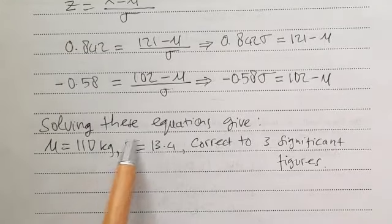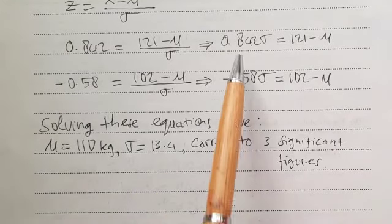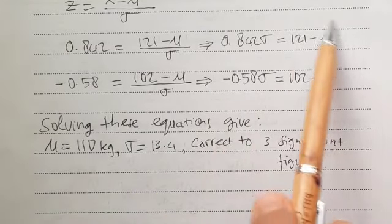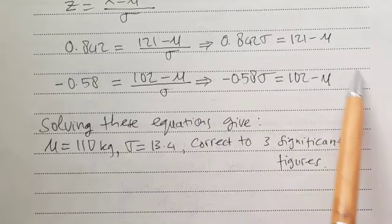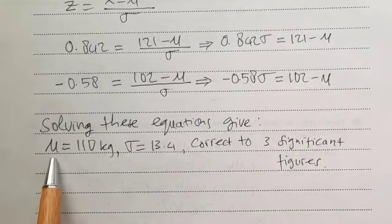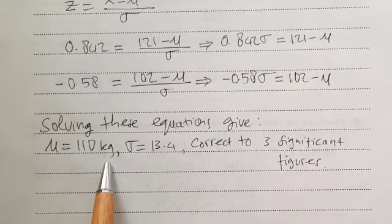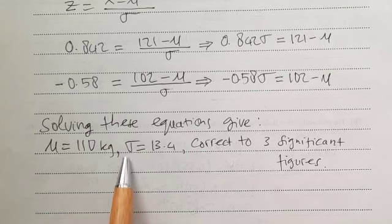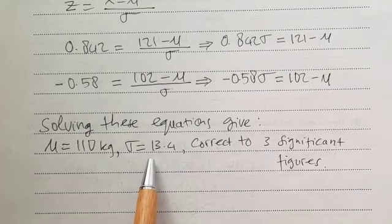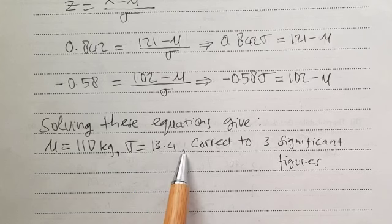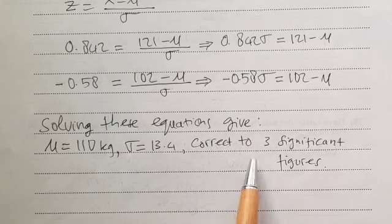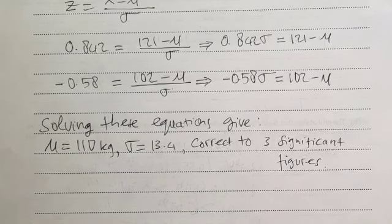Solving these two simultaneous equations gives the mean μ = 110 kg and standard deviation σ = 13.4 kg, both correct to three significant figures. That is all for now — see you in the next video, thank you.